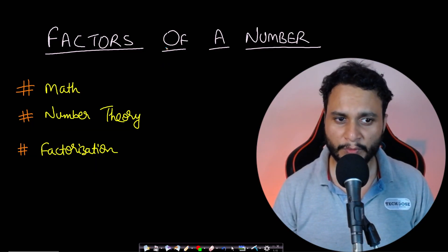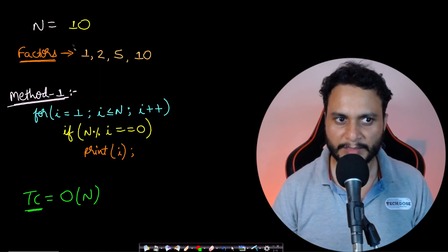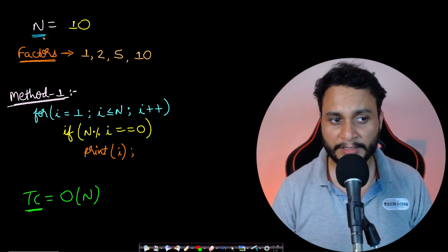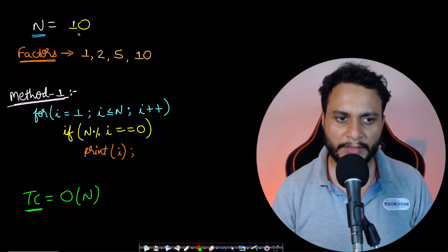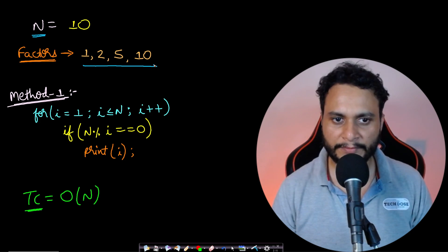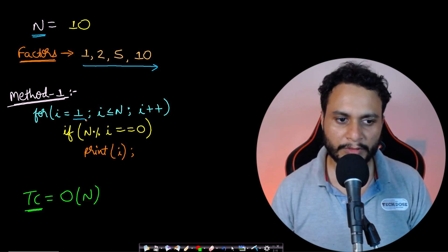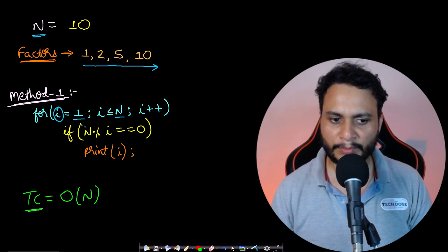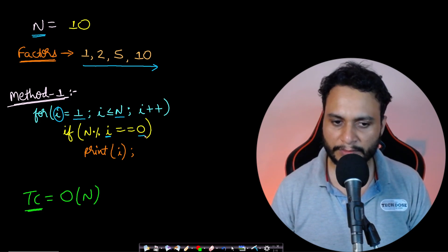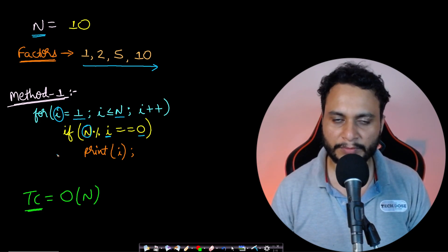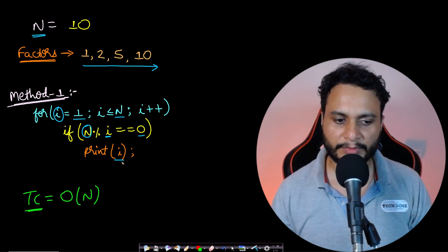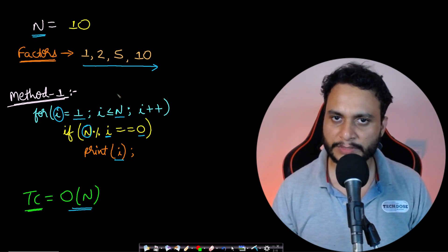Welcome back to Tech Dose. In this video we will see how to find all the factors of a given number. Let's take an example: if n equals 10, the factors are 1, 2, 5, and 10 — these are the numbers which can divide 10. A simple method is to iterate over all numbers from 1 to n and check if n mod i equals 0. If true, print that number. The time complexity of this approach is O(n).